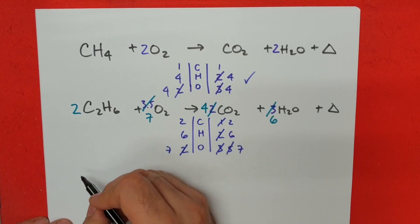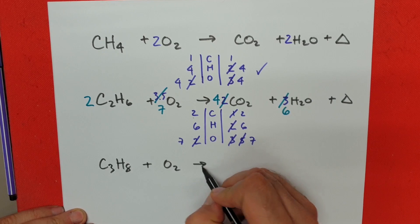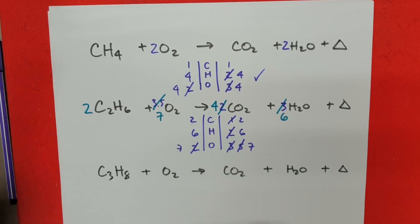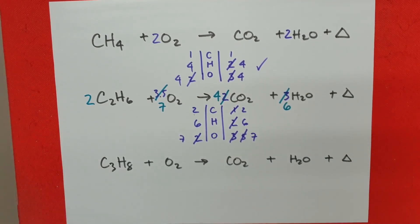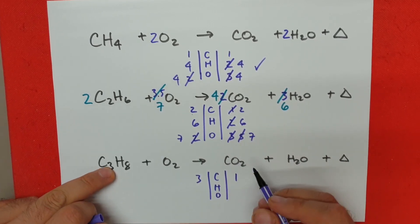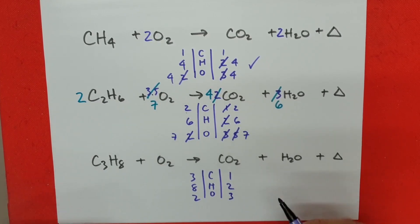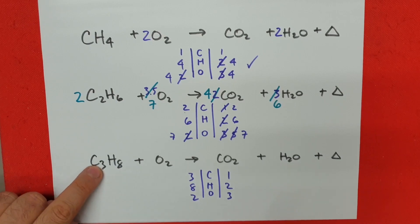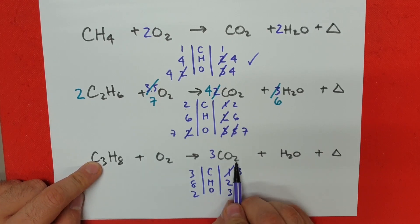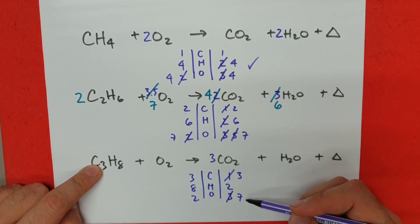Let's try another combustion reaction — propane this time. You're going to see this gets quite repetitive, but practice makes perfect, so it should be simple once you get the hang of it. We do our inventory again: C, H, O — three on this side, one on this side; eight on this side, two on this side; two on this side, three on that side. So three and one — I add a three. This changes everything: three times two is six, plus one is seven. Make sure you're updating your inventories, otherwise it becomes quite confusing.